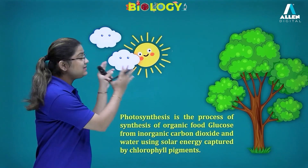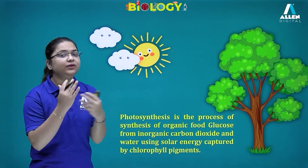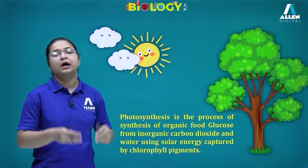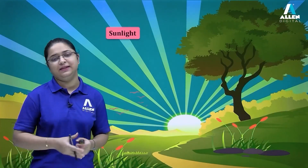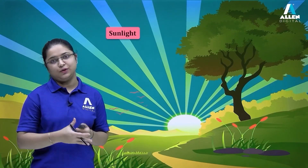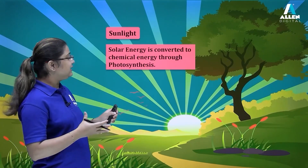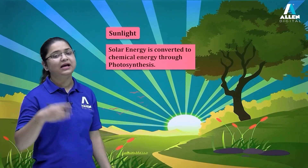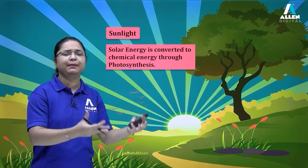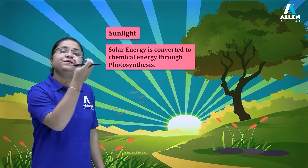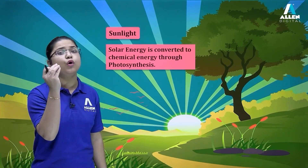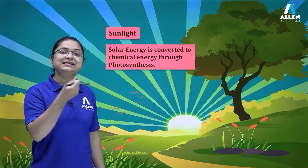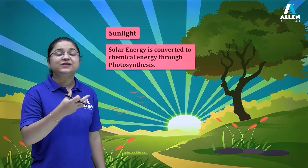Plants appear green to us, and they are able to trap light energy because they have a special chemical called chlorophyll. The solar energy is converted to chemical energy through the process of photosynthesis. This chemical energy is actually the fixation of solar energy in the form of glucose — that is how the energy from the Sun is fixed.